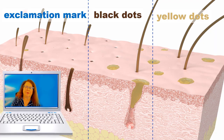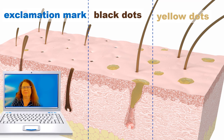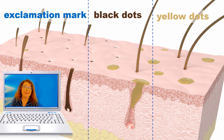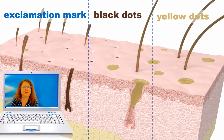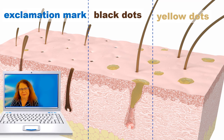To summarize, these are the three main trichoscopy features of alopecia areata: the exclamation mark hairs, the black dots, and the yellow dots. Are they specific? Well, they are typical, but there are diseases in which they may be present, so I encourage you to look for other features of alopecia areata before you make the trichoscopy diagnosis.